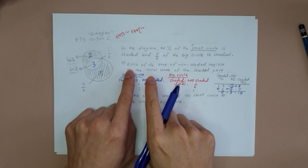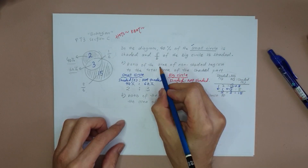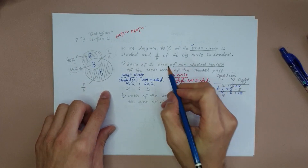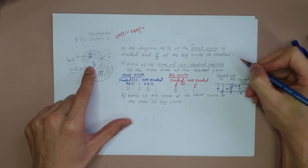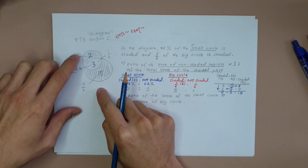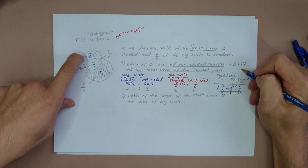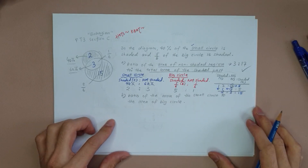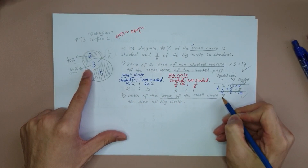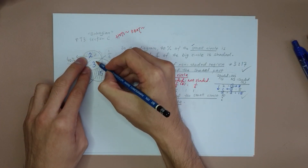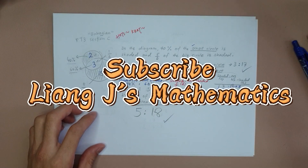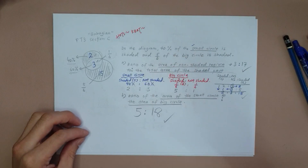Now we answer the questions. The ratio of the non-shaded region to the total shaded area: non-shaded is 3, and total shaded is 2 + 15 = 17, so the answer to part (a) is 3 : 17. For part (b), the ratio of the area of the small circle to the big circle: small circle = 2 + 3 = 5, big circle = 3 + 15 = 18, so the answer is 5 : 18. That's how you solve this HOTS question using the hamburger method.